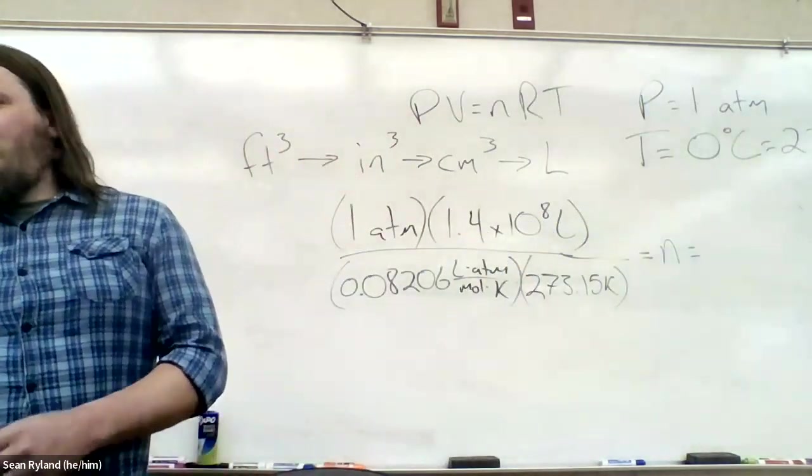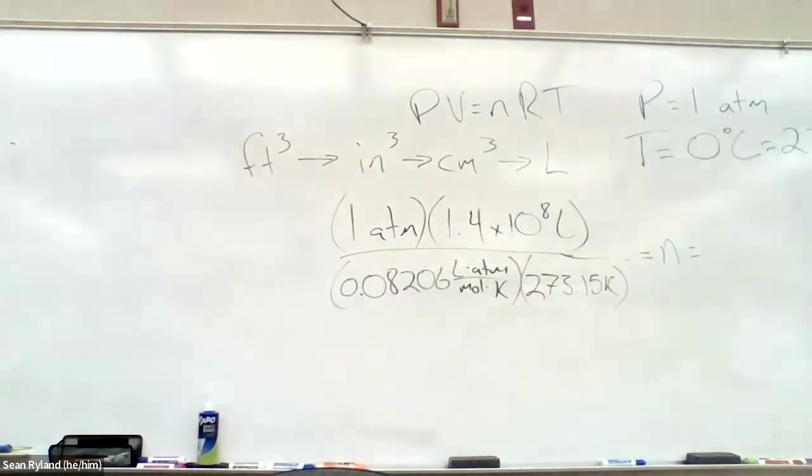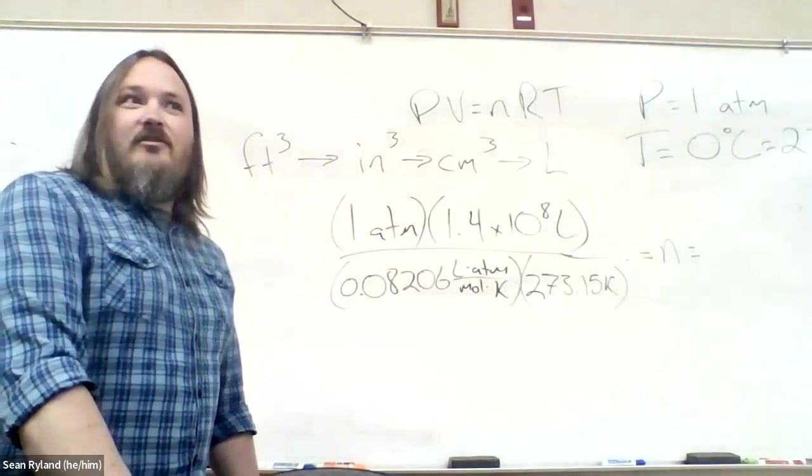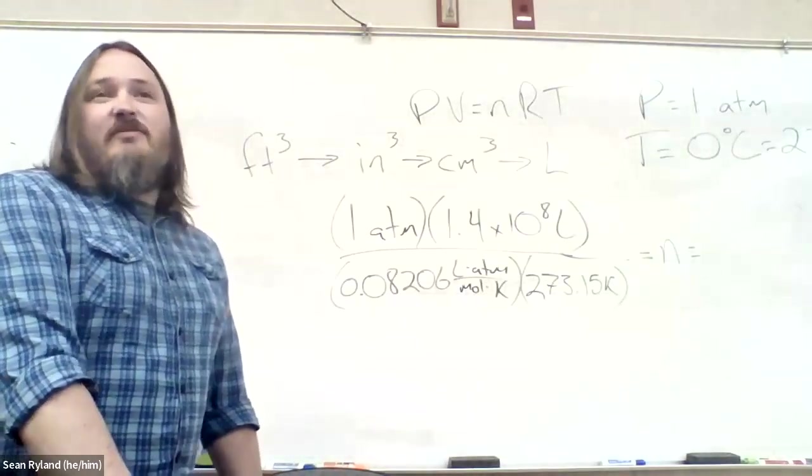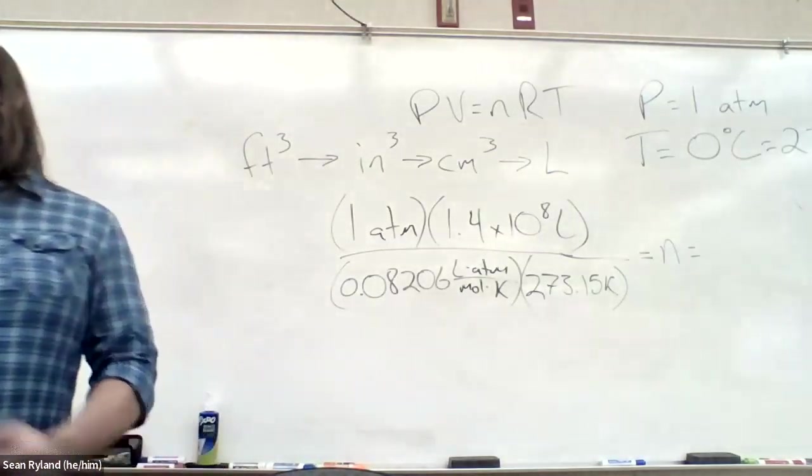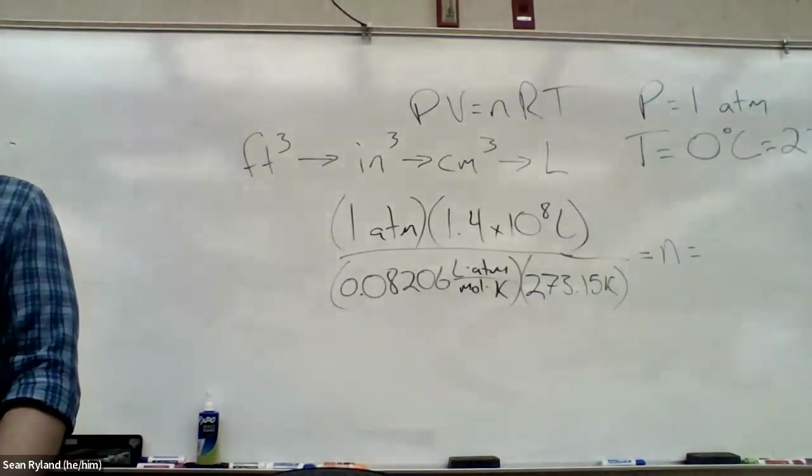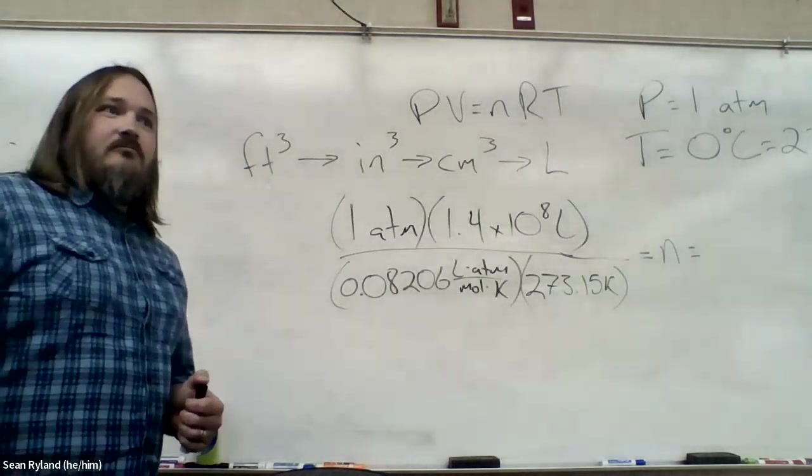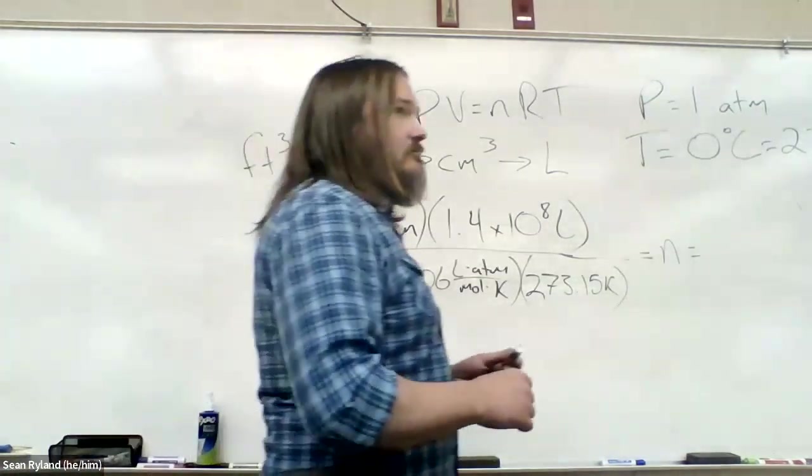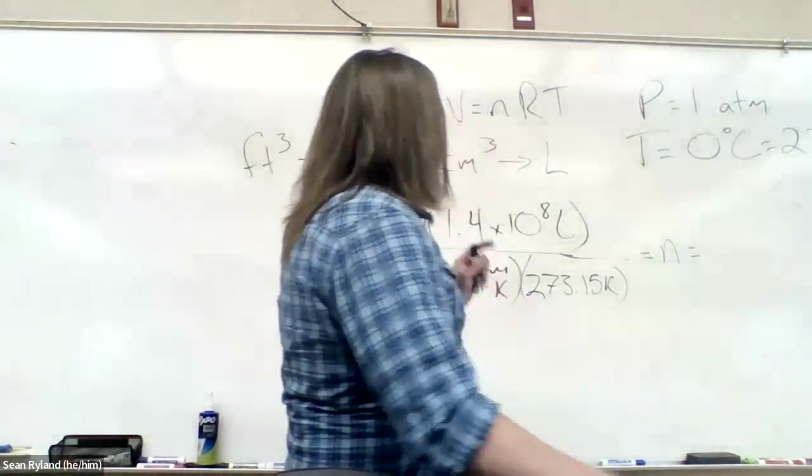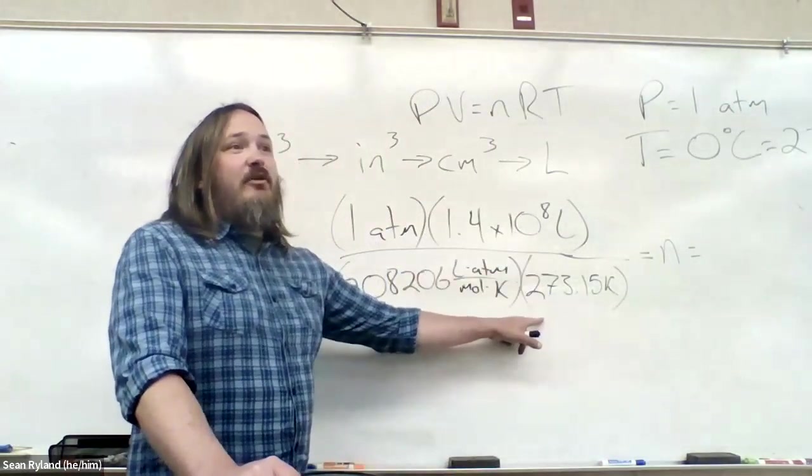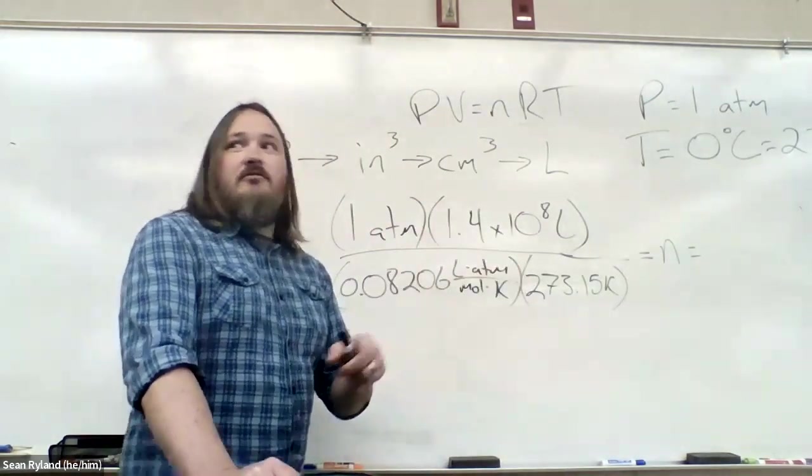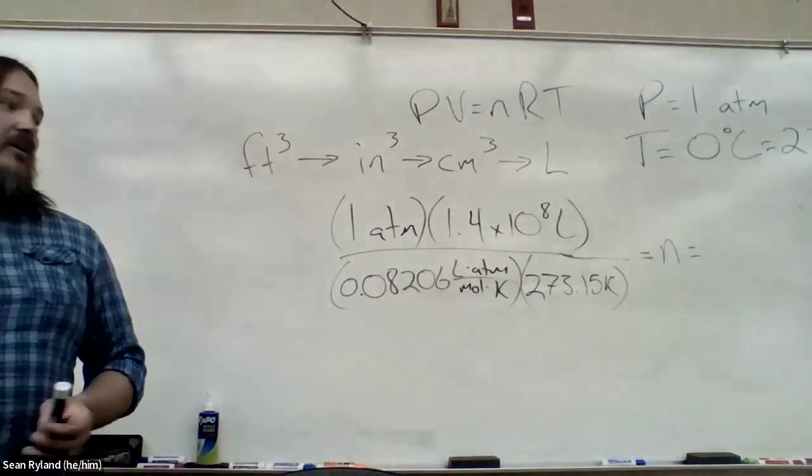Who can give me a number? Don't trust my numbers too much. I'm just really estimating in my head to get close. What'd you get, Josie? You've probably multiplied by 273 when you were supposed to divide by 273.